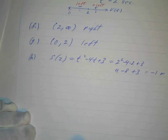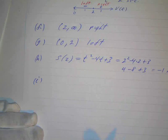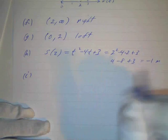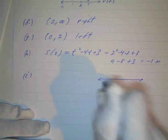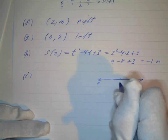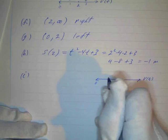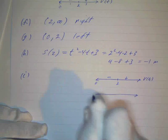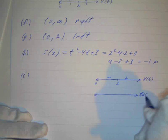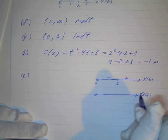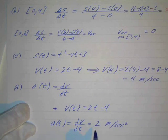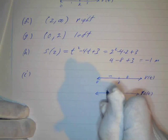Letter I: when is the speed increasing? And letter J: when is the speed decreasing? We have to compare acceleration and velocity. We draw two sign lines. The velocity is negative from 0 to 2 and positive from 2 to infinity. The acceleration is the derivative of velocity, which is a constant positive 2 meters per second squared, so the acceleration is always positive.